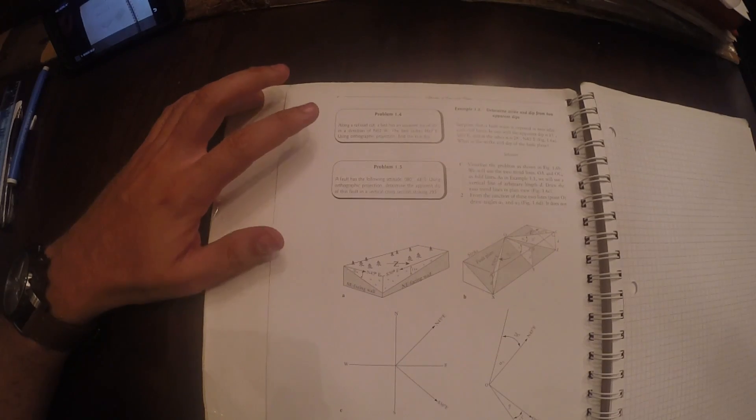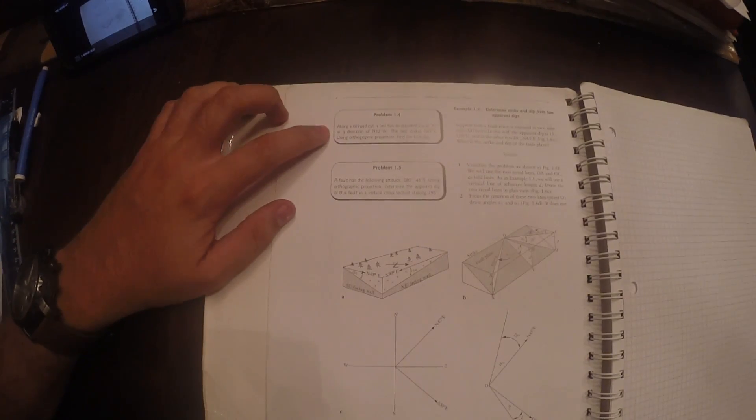Okay, so question 1.4 is: along a railroad cut, a bed has an apparent dip of 20 degrees in a direction of north 62 degrees west. The bed strikes north 67 degrees east.